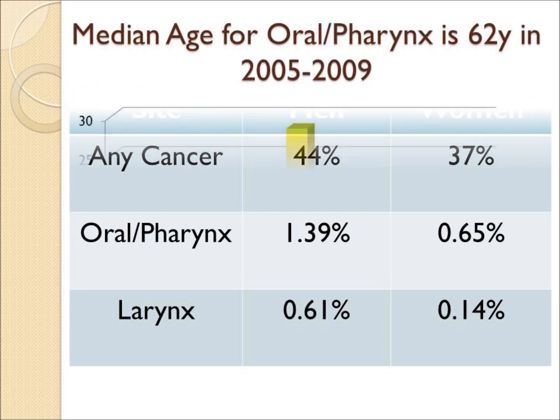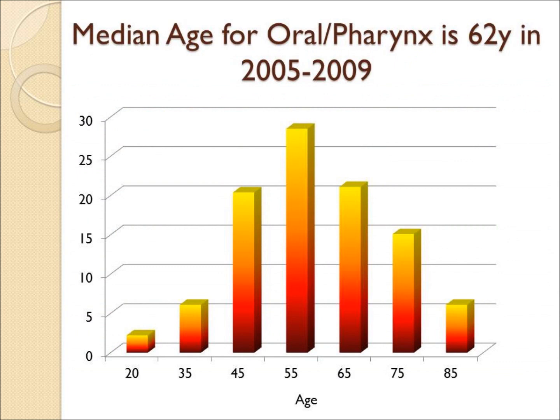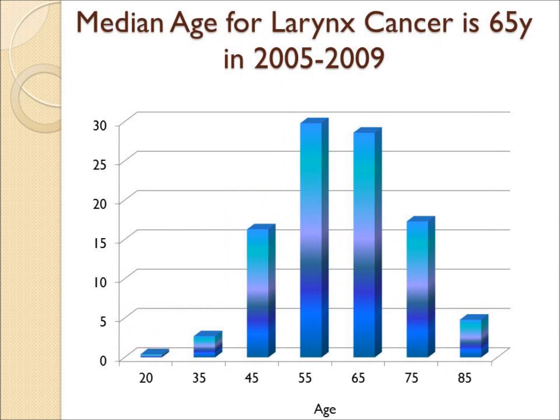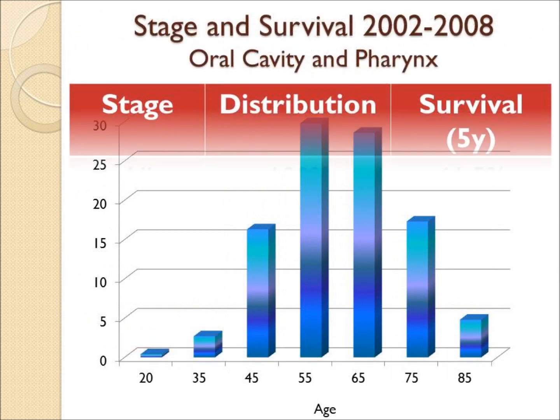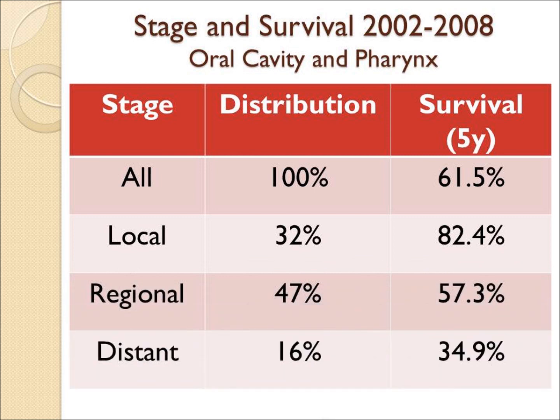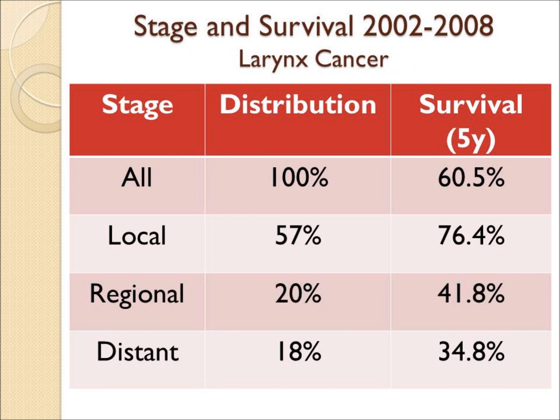The median age is 62 for mouth cancer, with the age distribution shown here. Larynx cancer presents a bit older at 65, with a similar age distribution. The stage and survival data is shown here for mouth cancer — many of these patients present with local or regional disease and have a reasonable outcome. Patients with larynx cancer are even more likely to present with early or local disease, because a hoarse voice will bring this to the attention of the doctor earlier.